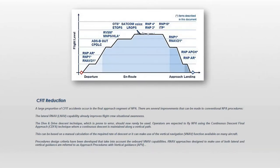A large proportion of CFIT accidents occur in the final approach segment of non-precision approaches. There are several improvements that can be made to conventional non-precision approach procedures. The lateral R-NAV capability already improves flight crew situational awareness. The dive-and-drive descent technique, which is prone to error, should now rarely be used. Operators are expected to fly non-precision approaches using the continuous descent final approach technique, where a continuous descent is maintained along a vertical path. This can be based on a manual calculation of the required rate of descent, or it can make use of the vertical navigation function available on many aircraft.